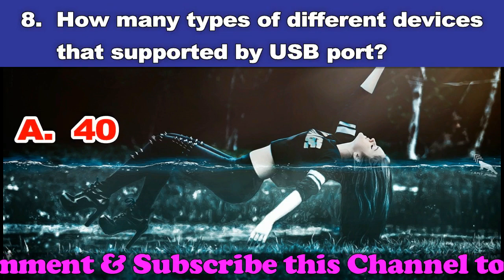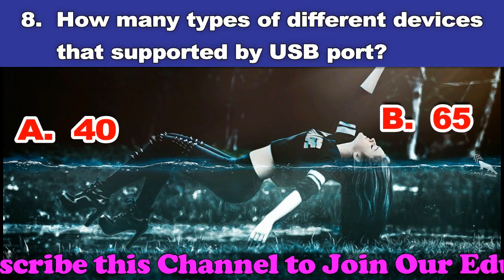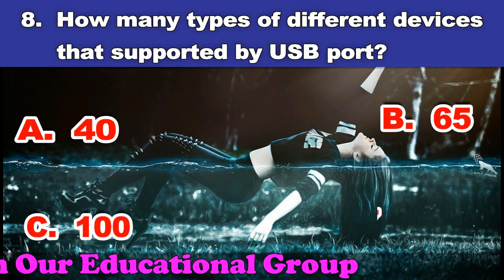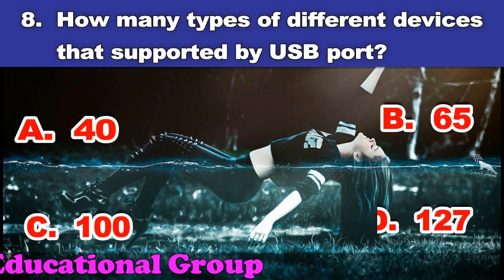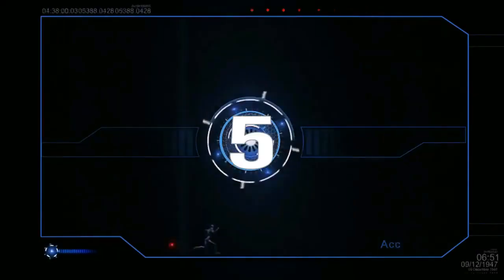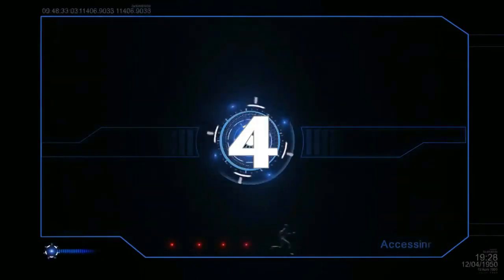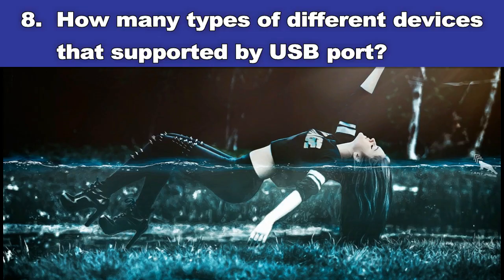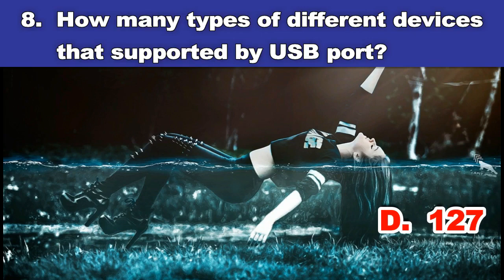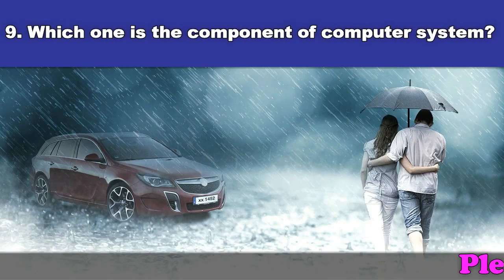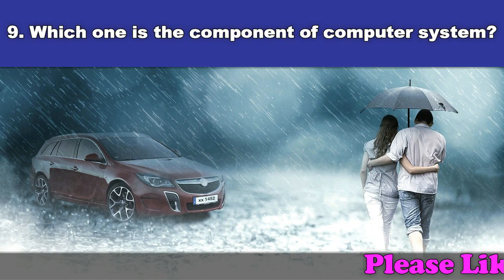Eighth question: How many types of different devices are supported by USB port? A. Forty. B. Sixty-five. C. One hundred. D. One hundred and twenty-seven. And the answer is one hundred and twenty-seven.